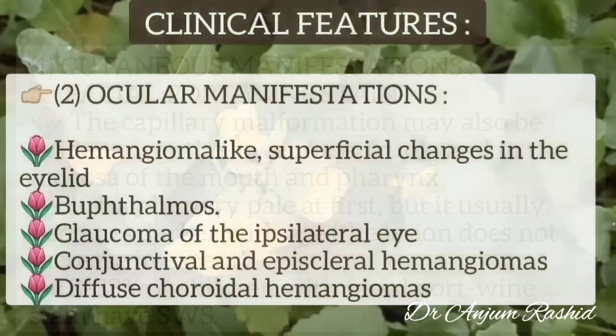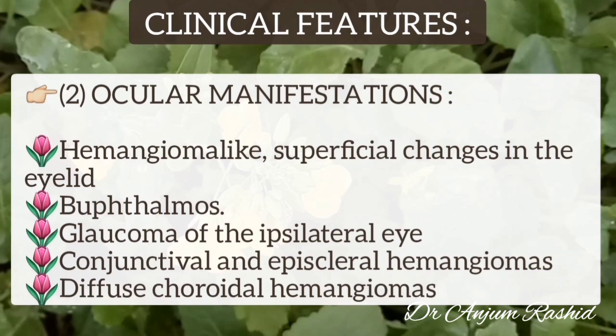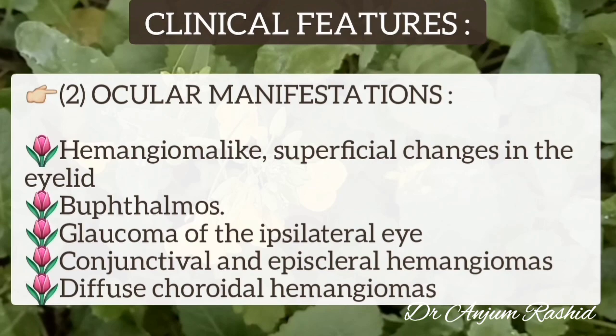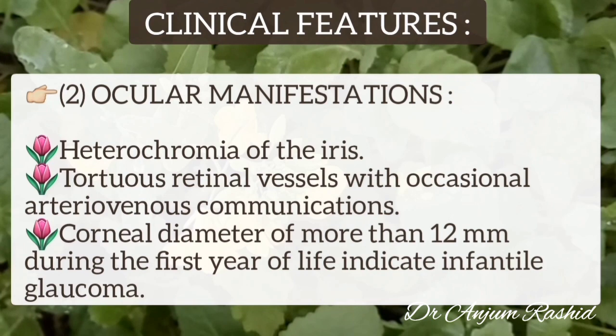The second important feature is the ocular manifestation. It includes hemangioma-like superficial changes in the eyelid, buphthalmos, glaucoma of the ipsilateral eye, conjunctival and episcleral hemangiomas, diffuse choroidal hemangiomas, heterochromia of the iris, and tortuous retinal vessels with occasional arteriovenous communication.